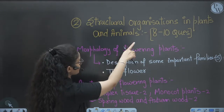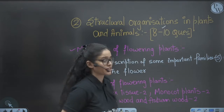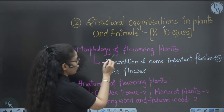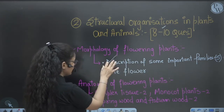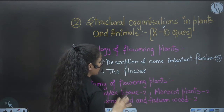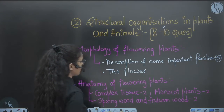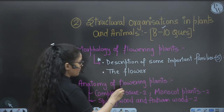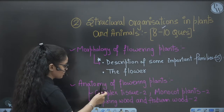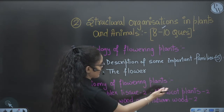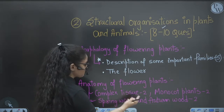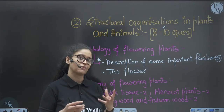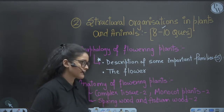The next unit is Structural Organization in Plants and Animals — eight to ten questions asked in past years. In Morphology of Flowering Plants, five questions have been asked, plus questions on flowers. The taxonomy of flowering plants is very important. Complex tissue: two questions; monocot: two questions; spring or autumn wood: two questions — mixed questions from this chapter, so you have to revise it very nicely.